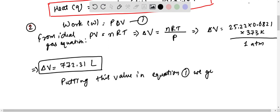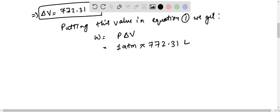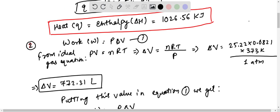We get W equals to P delta V. So P is nothing but this is 1 ATM and delta V is 772.31, this is in liters. This will give us 772.31. And remember R is a gas constant. R is a gas constant and T is temperature. N is the number of moles, V is volume and P is pressure.